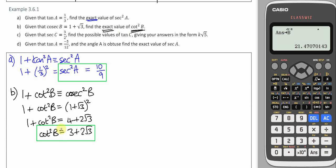And then if we want the exact value of cot squared B, cot squared is 1 over tan squared. So I need to do 1 over, I'm going to open brackets here.